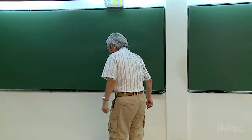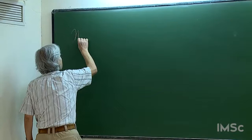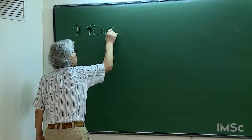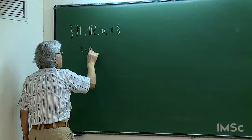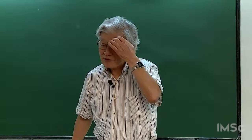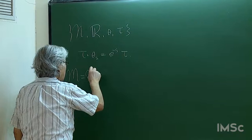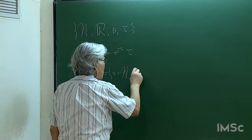We now encounter the following system. We have a semi-finite von Neumann algebra N equipped with a real line action θ and a trace τ such that τ∘θ_t = e^{-t}·τ. We write M to be the fixed point algebra: M = {x ∈ N : θ_s(x) = x for all s}.